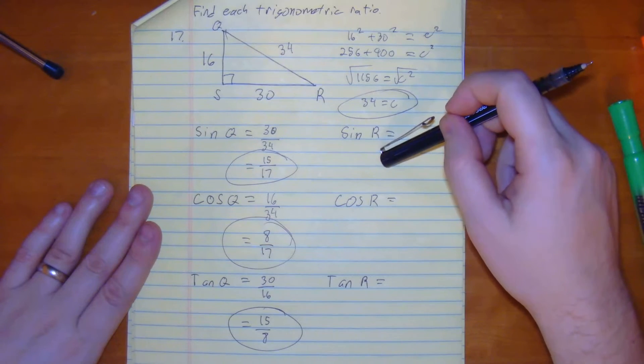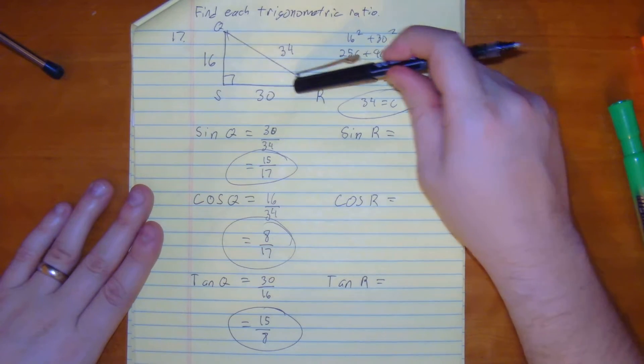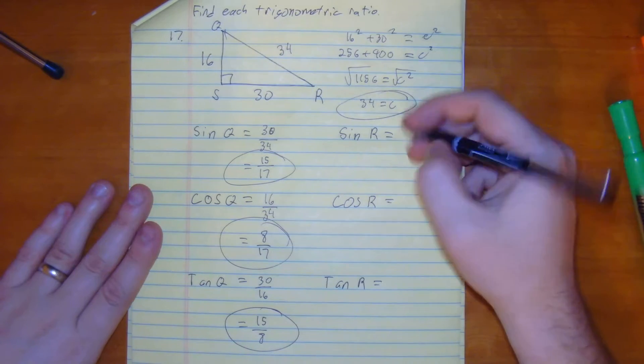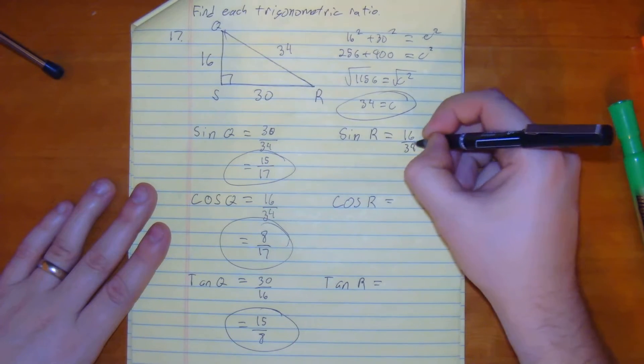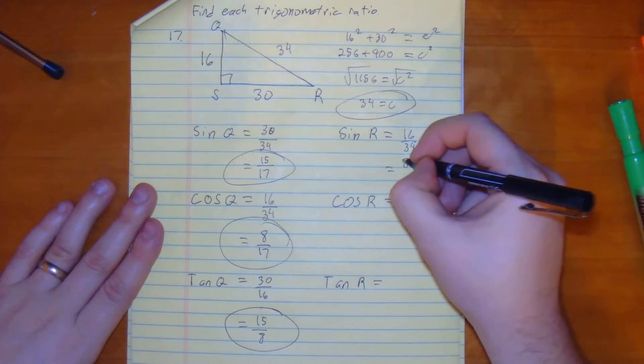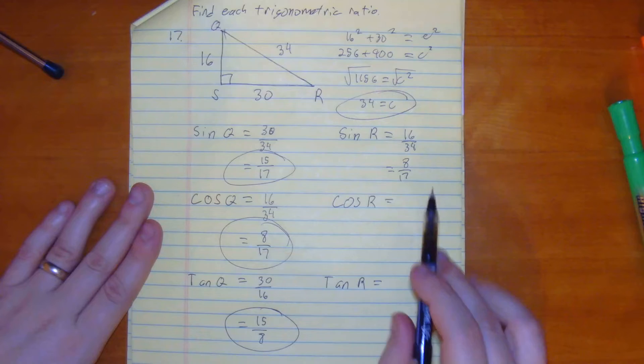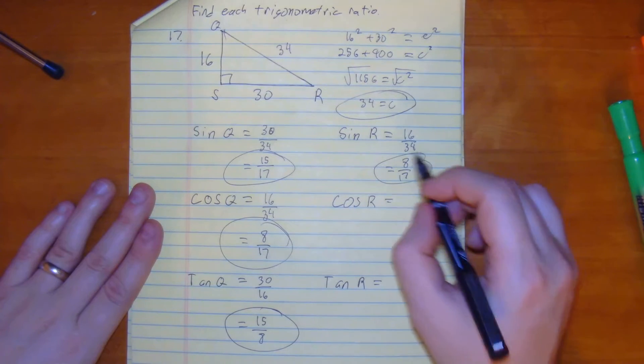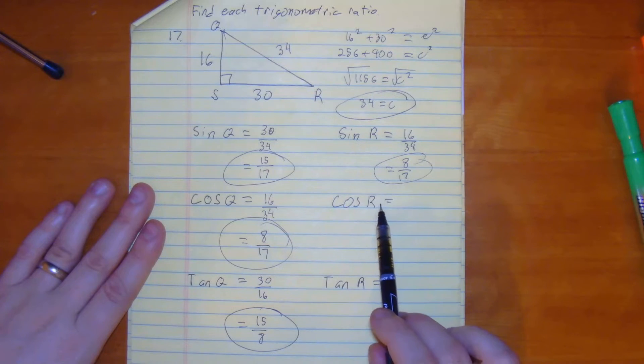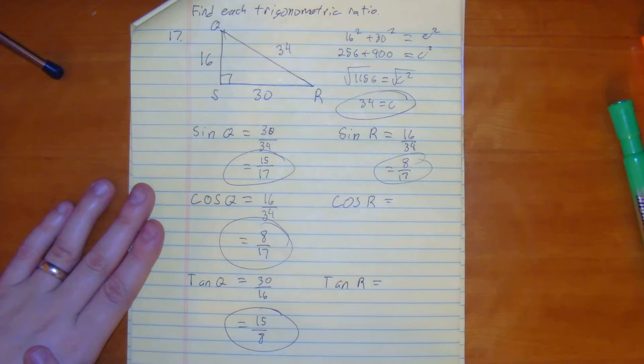Alright, so the sine of r. The sine of r is going to be 16 over 34, which would simplify to 8 over 17. And why don't you look at that? We have sine of r is the same as cosine of q. So let me take a guess that the cosine of r is going to be the same as sine of q.